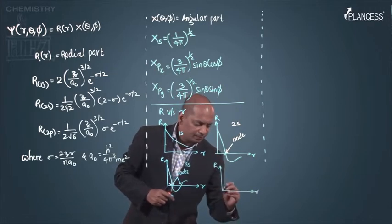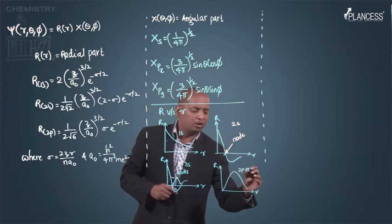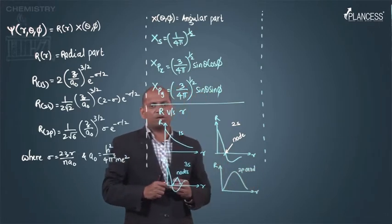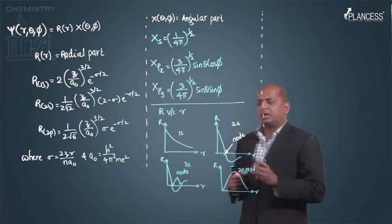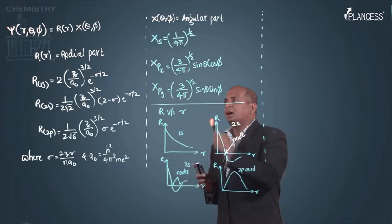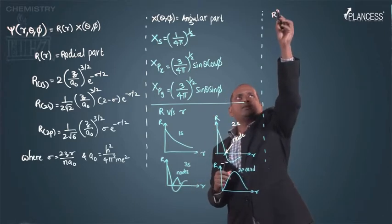And for 2p or 3d orbital, we are getting the same graph, almost like this way. This is one way of representing the orbital, the radial part. There is one more way, that is r² versus r.